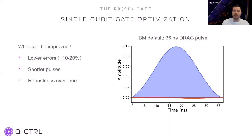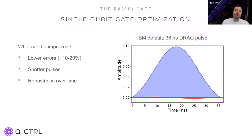The IBM default RX90 is a 36-nanosecond DRAG pulse that is calibrated on a daily basis. The DRAG scheme reduces leakage to higher levels outside of the computational space. Leakage is typically one of the main obstacles in achieving shorter gates. Unlike with two qubit gates, the performance of the default RX90 is not far from the T1 limit. We can still achieve some improvement in performance and make it even closer to the T1 limit. We can also look for shorter pulses without degrading performance, and for robustness over time, which may obviate the need for daily calibrations.